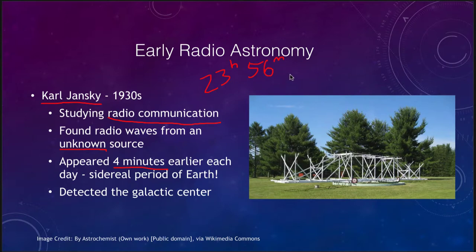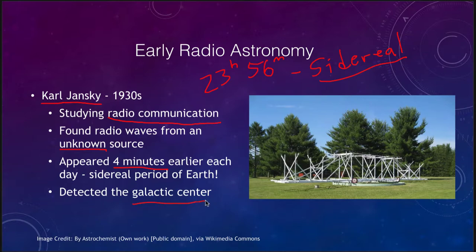That 23 hours and 56 minutes is the rotation period of the Earth relative to the stars — what we call the sidereal rotation period. Because of that, these objects were not associated with the Earth and could not be associated with the Sun; they had to be something else out in space. What he was detecting was the galactic center. The center of our galaxy is invisible in visible light, but in radio waves it is one of the strongest radio sources in the sky, and therefore Carl Jansky was able to detect it with his early instrumentation.